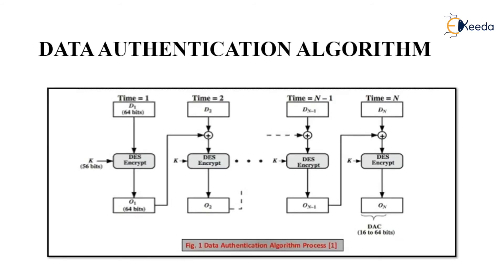This is the diagrammatic representation of the data authentication algorithm. We can see that D1 bits undergo encryption with DES using a 56-bit key, giving output O1 as a 64-bit value. Following the CBC working functionality, the output is then given as input for XORing with the next step: D2 is XORed with O1, then undergoes DES encryption with the 56-bit key to give another output. This is why DAA follows cipher block chaining mode of operation.